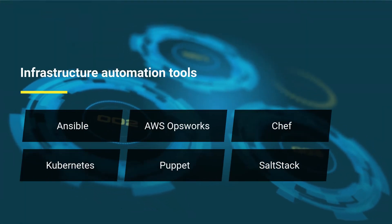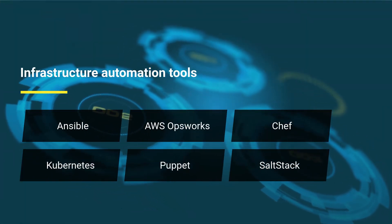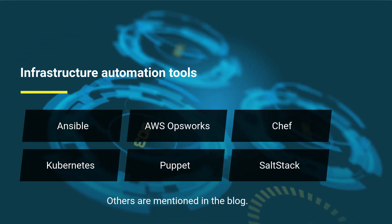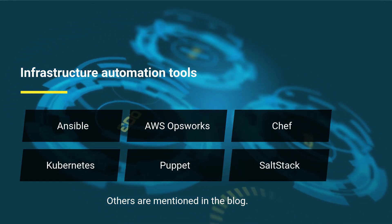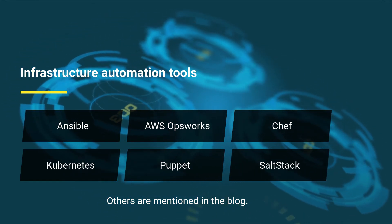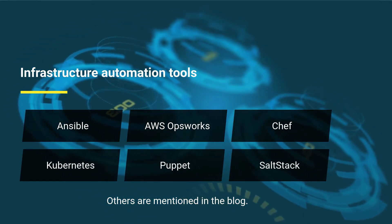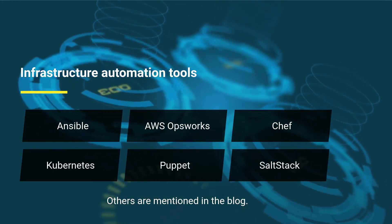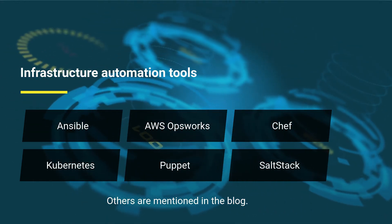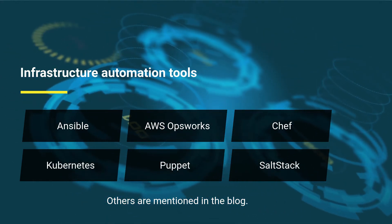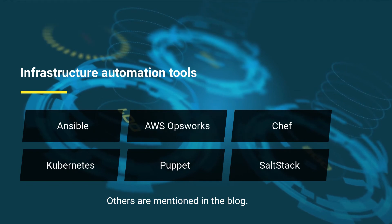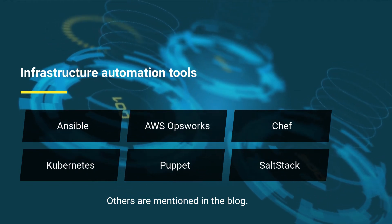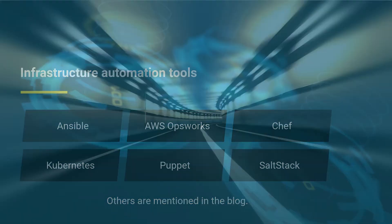Infrastructure Automation Tools: first, Ansible; second, AWS OpsWorks; third, Chef; fourth, Kubernetes; fifth, Puppet; sixth, SaltStack. Others are mentioned in the blog.